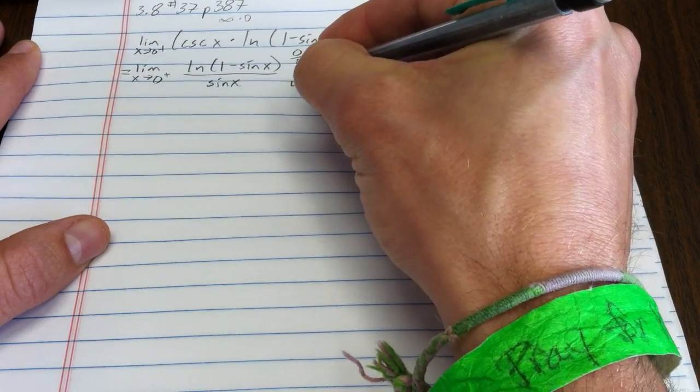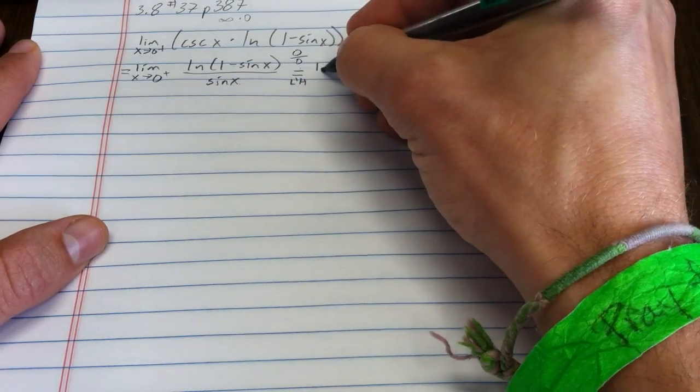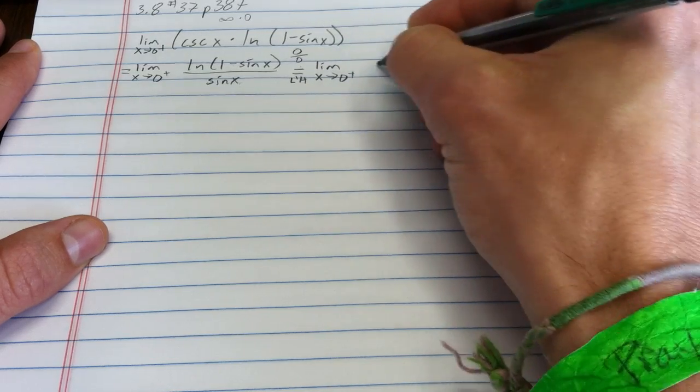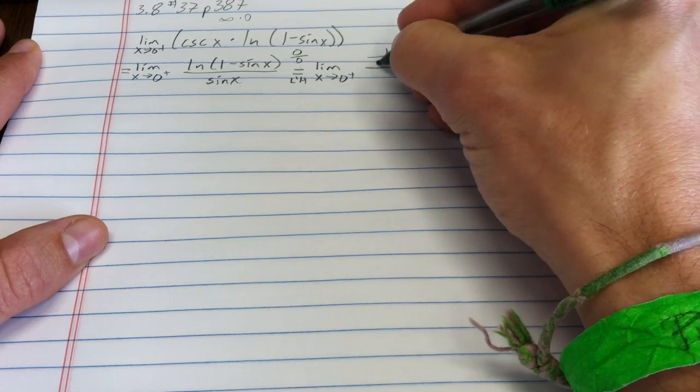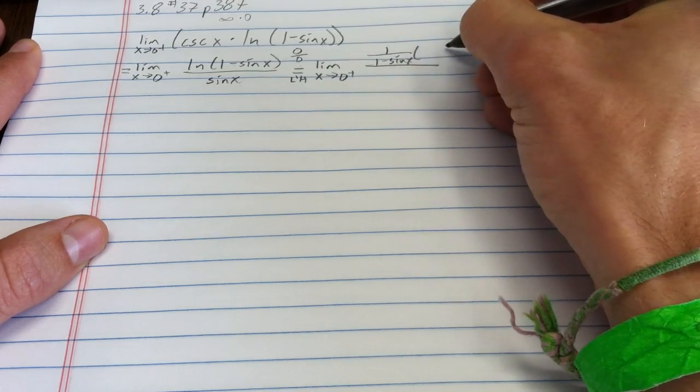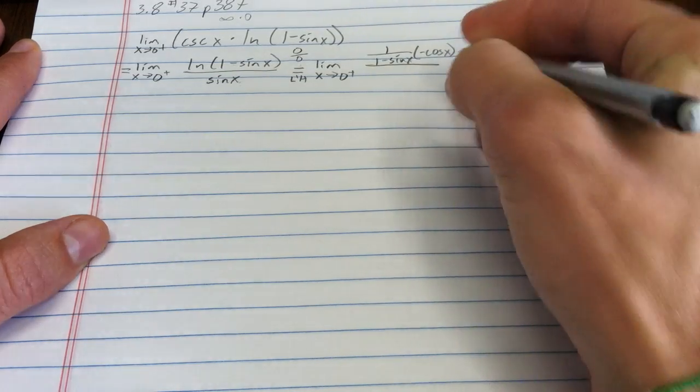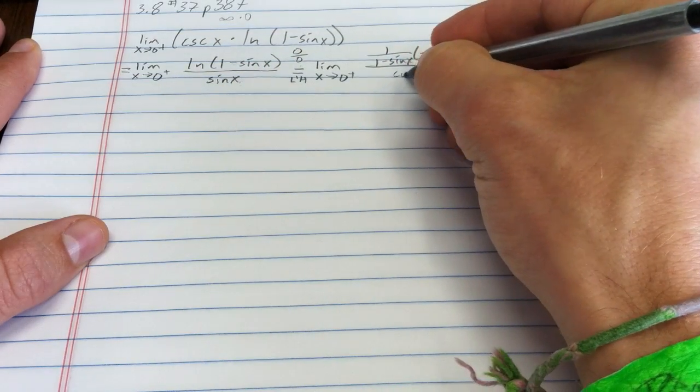Very convenient. I'll write a little LH to indicate I'm using L'Hôpital's rule and I'll leave my limit. I'm going to have to use the chain rule in the numerator. That's 1 over 1 minus sine x times the derivative of that. The derivative of that is negative cosine x. Then in the denominator, the derivative of sine is cosine.